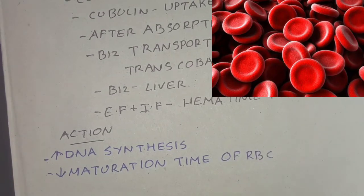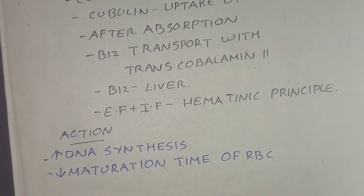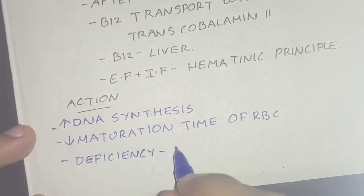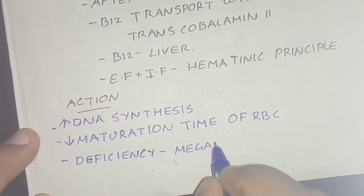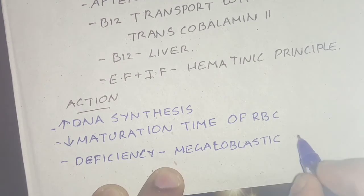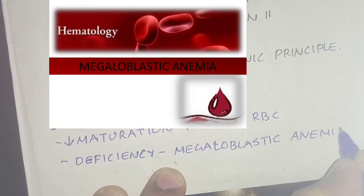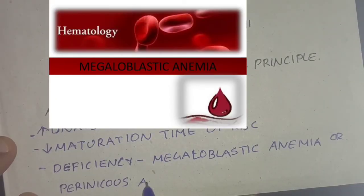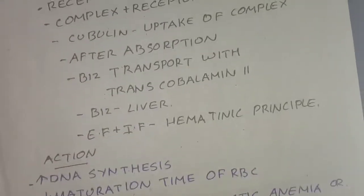B12 works with folic acid in the synthesis of DNA. In B12 deficiency, maturation is increased and the number of cells is decreased, and the cells will be large, leading to megaloblastic anemia or pernicious anemia. Neurological symptoms are more prominent in B12 deficiency.